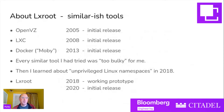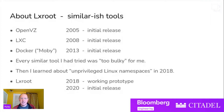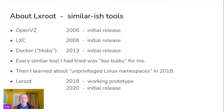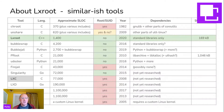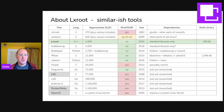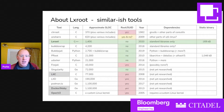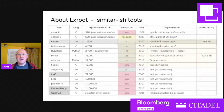Some similar-ish tools: there's OpenVZ, LXC, and docker. Every similar tool I had tried was too bulky for me. I learned about unprivileged Linux namespaces in 2018, so I started writing LXroot, had a working prototype fairly quickly, and published the first source code in 2020. Here's a table of tools similar to LXroot, organized with smaller tools closer to the top. LXroot is one of the smaller tools in terms of lines of source code, does not require root access, was initially released in 2020, and depends only on standard libraries. You can compile LXroot into a 169 kilobyte static binary.